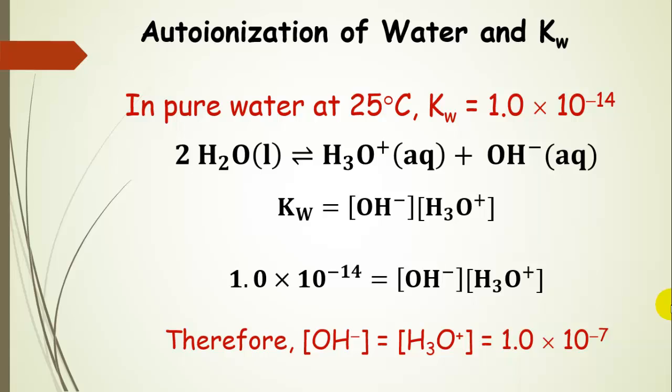In pure water at 25 degrees C, KW, which is the equilibrium constant for water, KW is 1.0 times 10 to the negative 14. That's at 25 degrees C. So now our expression looks like this. And then we're going to go ahead and put in 1 times 10 to the negative 14, which is the value for KW, the equilibrium constant for the auto ionization of water. And then we will be able to calculate the concentrations of hydroxide and hydronium in pure water at 25 degrees C. And that's 1 times 10 to the negative 7.